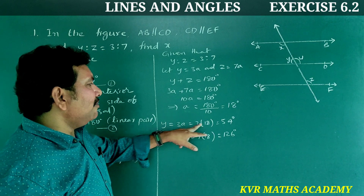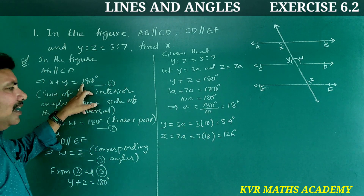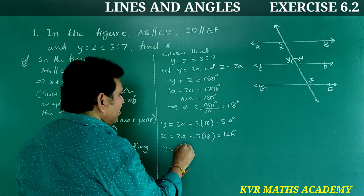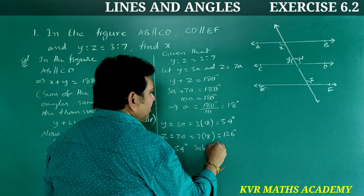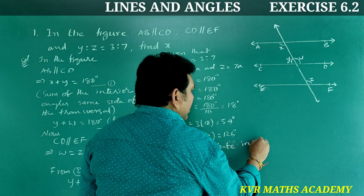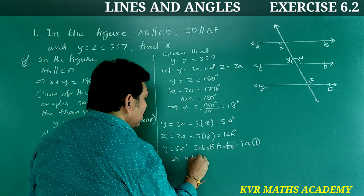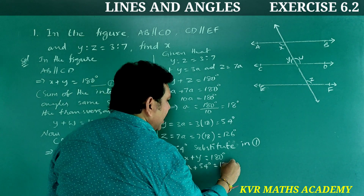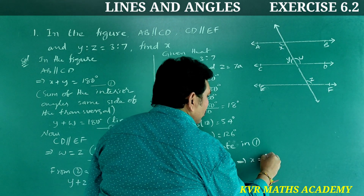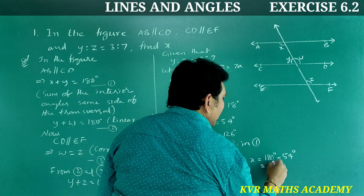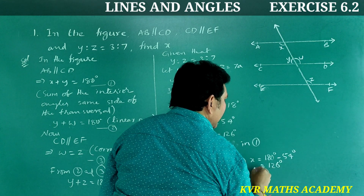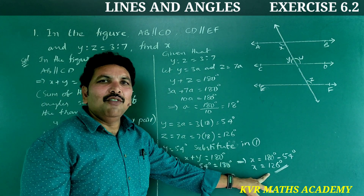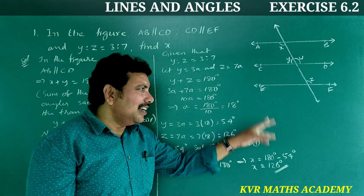Now substituting Y equals 54 degrees into equation 1: X plus Y equals 180 degrees, so X plus 54 equals 180, which gives X equals 180 minus 54 equals 126 degrees. So X equals 126 degrees.